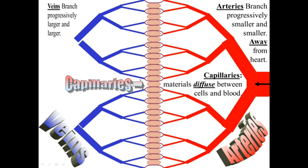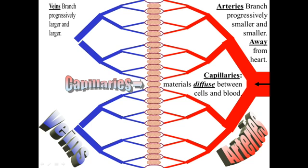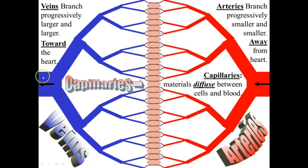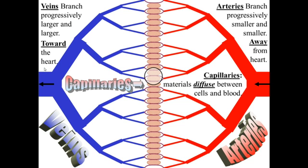After leaving the capillaries, blood returns through veins. Just as arteries branched progressively smaller and smaller coming away from the heart, veins branch progressively larger and larger as they carry blood back towards the heart. This represents the aorta on one side — the largest artery — and the vena cava on the other side, which is the largest vein.